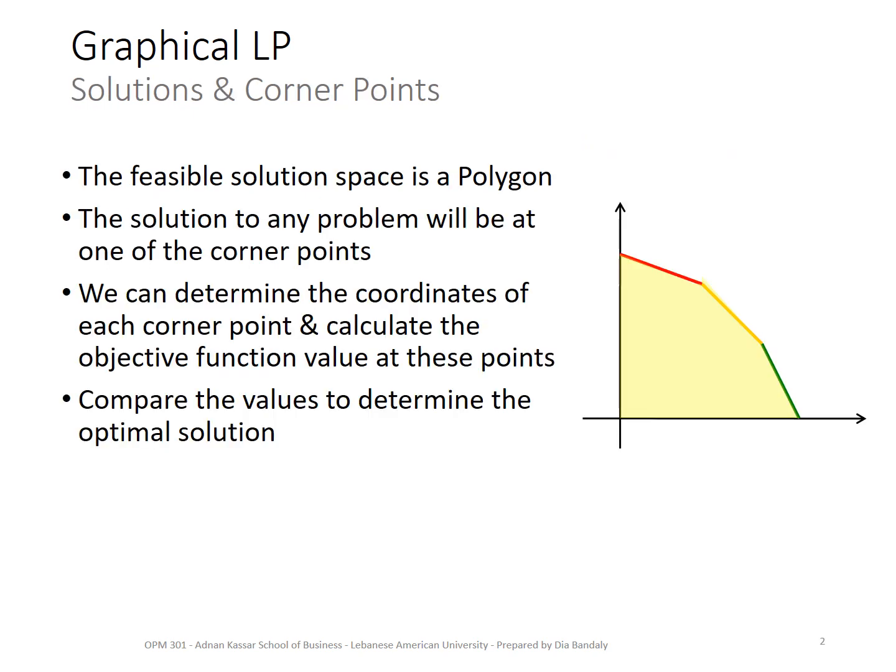Another property that can be seen graphically is what we call the corner point solutions. Whenever we have two decision variables, you will see that this feasible solution space is like a polygon — this yellow polygon that we have.